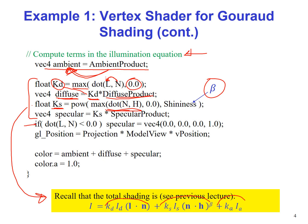Now we have an if statement here. If the dot product of L and N is less than zero, then we set the specular component to all zeros.